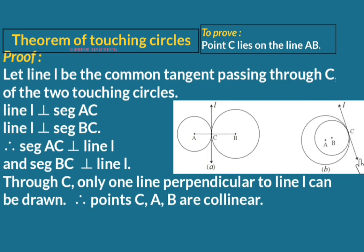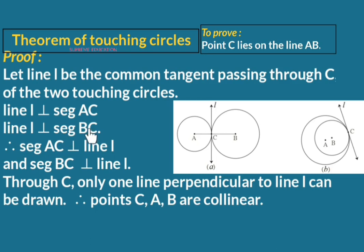Therefore, line L is perpendicular to segment AC, and line L is perpendicular to segment BC. From these two statements: segment AC is perpendicular to line L, and segment BC is perpendicular to line L.